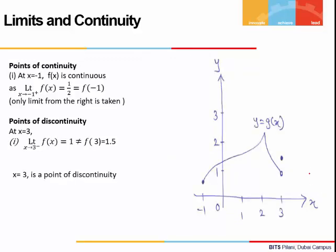In this example, let's first check x = -1. When x approaches -1, we see that the function is approaching 0.5. The value of the function at x = -1 is also 0.5. So x = -1 is a point of continuity.